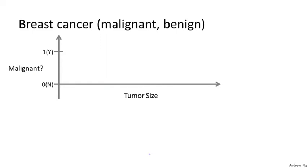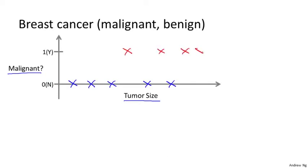Here's another supervised learning example. Let's say you want to look at medical records and try to predict whether a breast tumor is malignant or benign. A malignant tumor is harmful and dangerous; a benign tumor is harmless. You collect a data set where the horizontal axis is tumor size and the vertical axis is 1 or 0 — yes or no — whether each tumor was malignant or benign. We saw benign tumors plotted at the bottom and malignant tumors with a vertical axis value of 1.